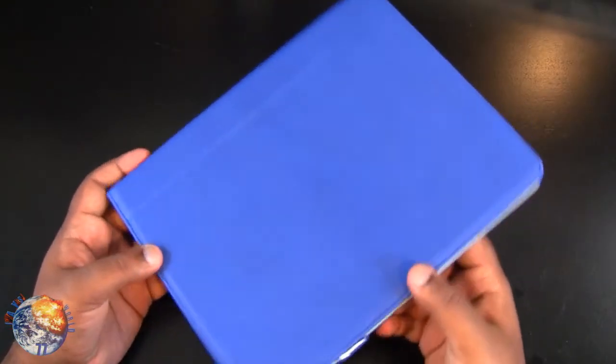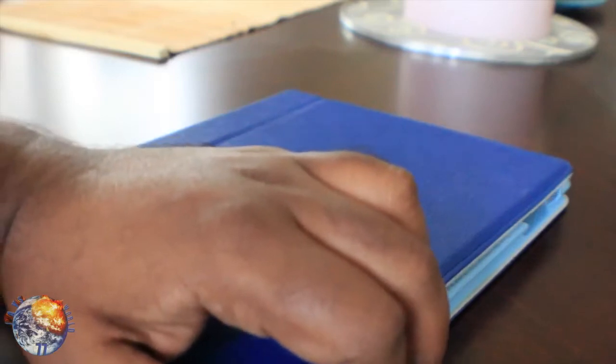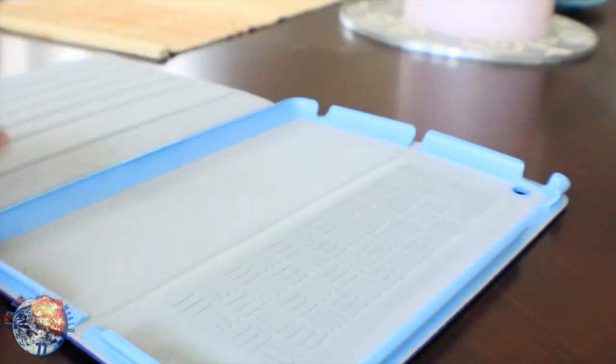So here's the actual case itself. Now SwitchEasy claims that this is the thinnest folio design in the market. The outer shell actually has a really nice matte finish and feels really soft where you can have a nice grip in your hand. Once you open this up, you have a nice felt material as you can see here.